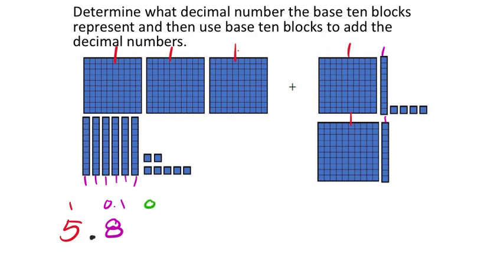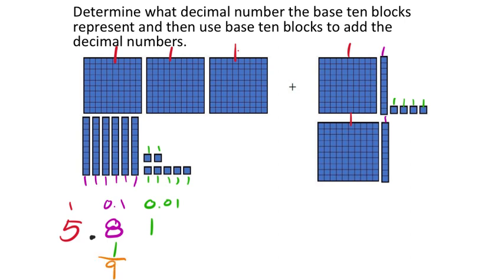Now we will add up the hundredths — that's 0.01. How many of those are there? 1, 2, 3, 4, 5, 6, 7. Then we'll add these other ones: 8, 9, 10, 11. That would be 11 hundredths. I'm going to take this extra 1 hundredth, and since there were 10 of them, I now have an extra tenth to combine with my other 8 tenths, giving me 9 tenths. So my final answer is 5.91, or 5 and 91 hundredths.